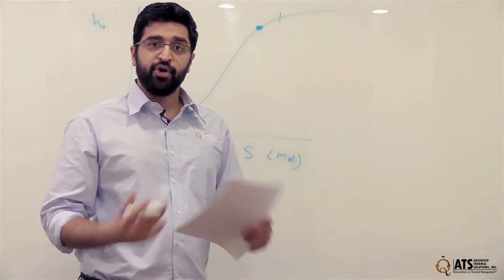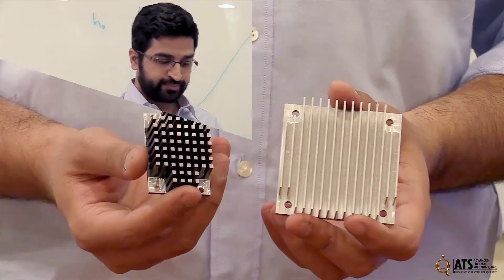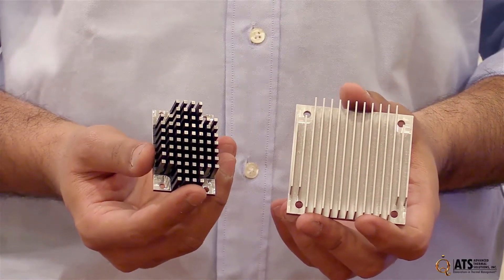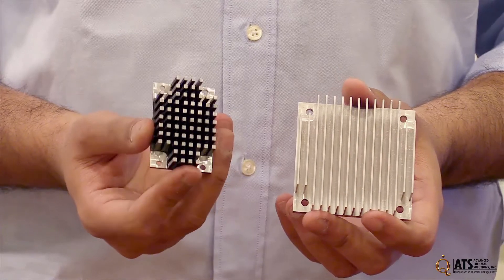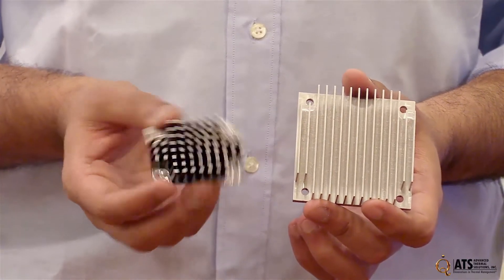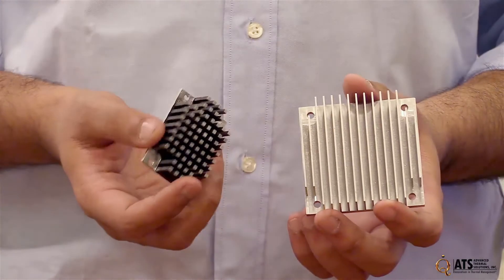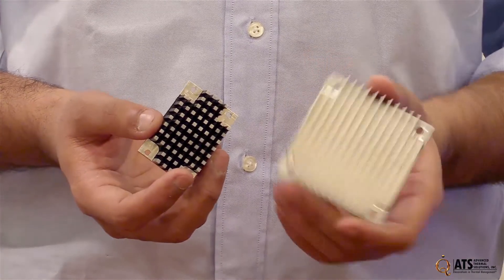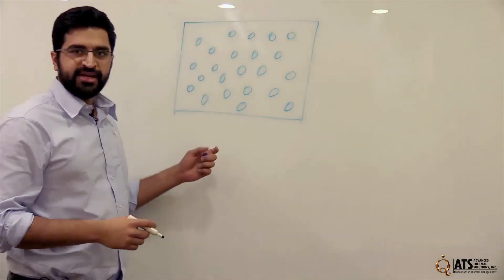So the two main heatsink shapes that we want to talk about is the straight fin and the pin fin. They both have their advantages and disadvantages, but one of them is specifically better in natural convection. On the other hand, here's a pin fin example.